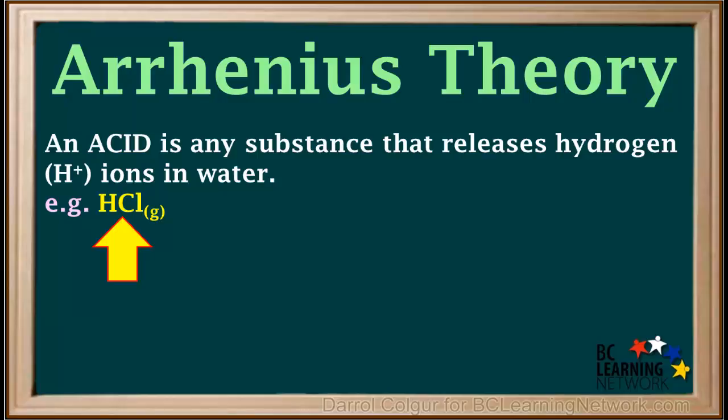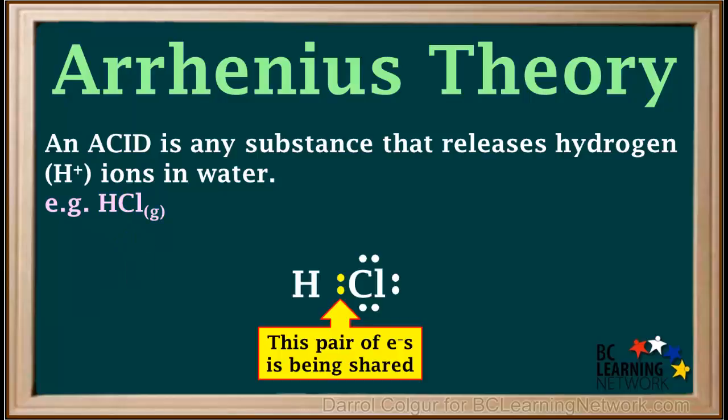An example is the gas hydrogen chloride, HCl. Looking at the Lewis structure of hydrogen chloride, we see that there is a covalent bond between the hydrogen and chlorine atoms. They are sharing a pair of electrons.